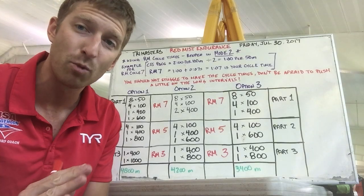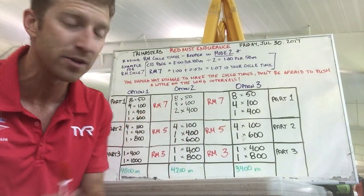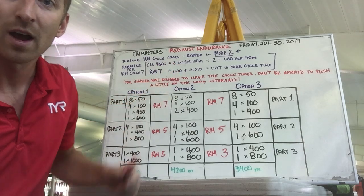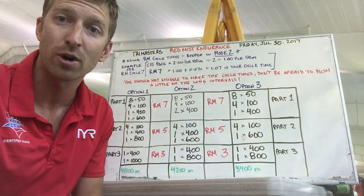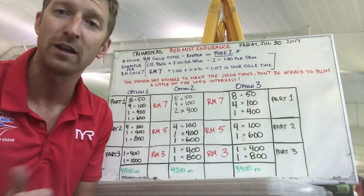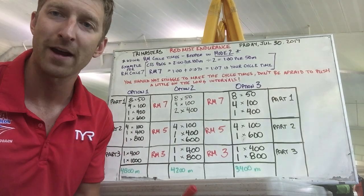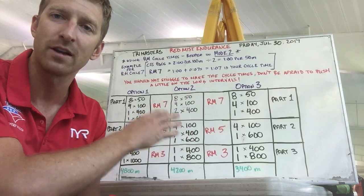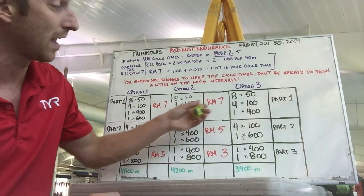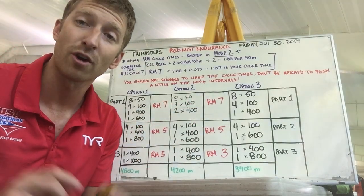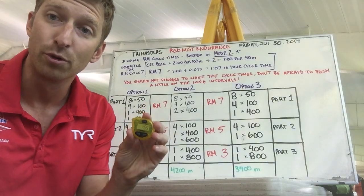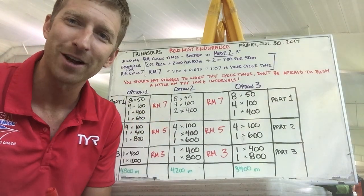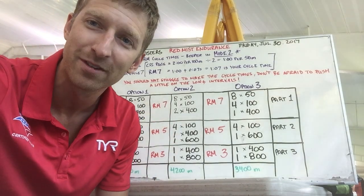I hope that helps explain the RM cycles. Go back and rewatch this, and plug in your own numbers. Rather than your CSS pace starting at two minutes per hundred, maybe it's one minute fifty seconds — divide that by two, that's 55 seconds per 50 — then add the RM number. At RM7 you would start off at 1:02 on your beeper in mode two. Go back, rewatch, and I hope this helps.